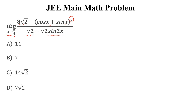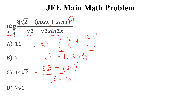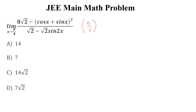How can we solve this? We can put x approaches to pi by 4 in this question and we will get 8 times square root of 2 minus (cos(π/4) plus sin(π/4)) to the power 7, divided by square root of 2 minus square root of 2 times sin(2·π/4), which is sin(π/2). Now simplify: 8 times square root of 2 minus (sqrt(2))^7 divided by square root of 2 minus square root of 2. Since (sqrt(2))^7 equals 8*sqrt(2), this gives 0/0 form, so we will use L'Hôpital's rule to solve this.